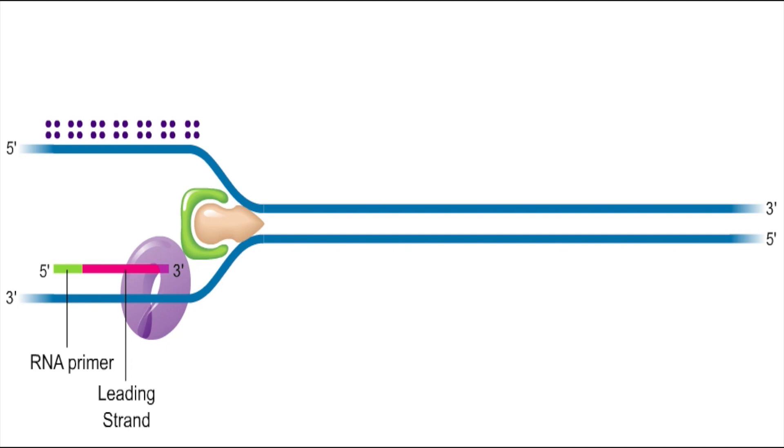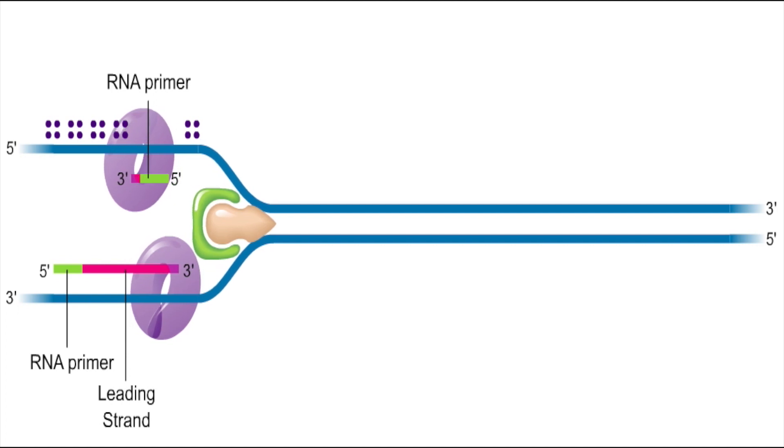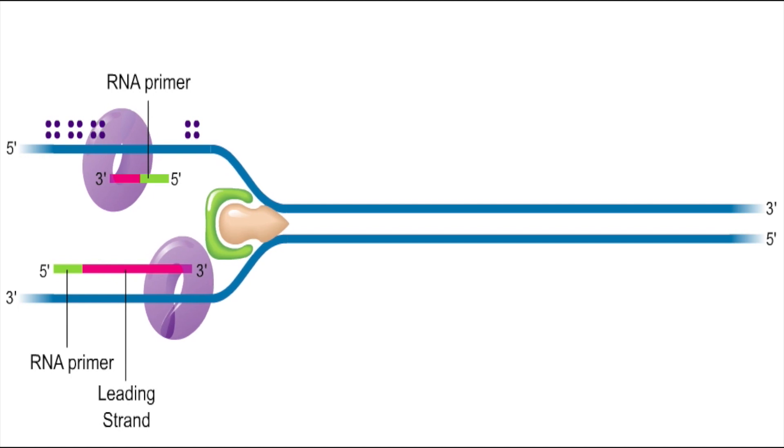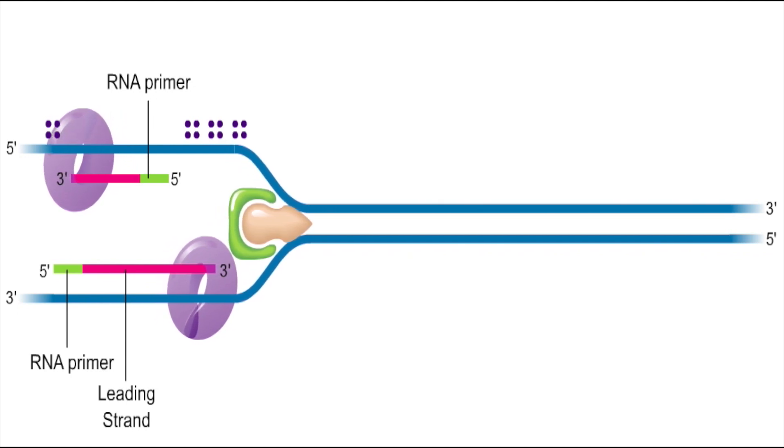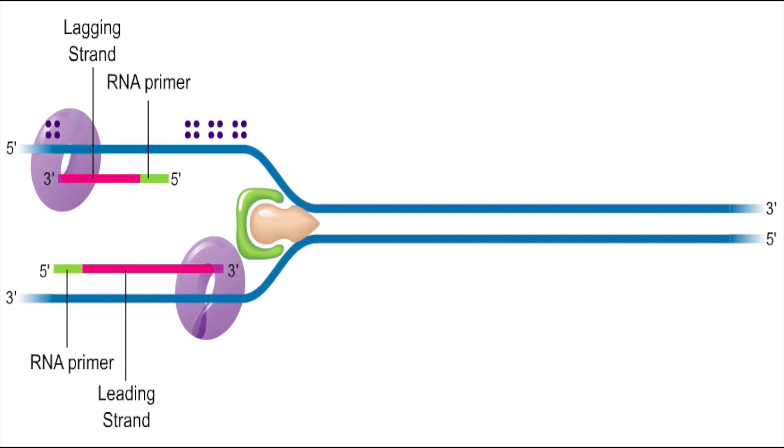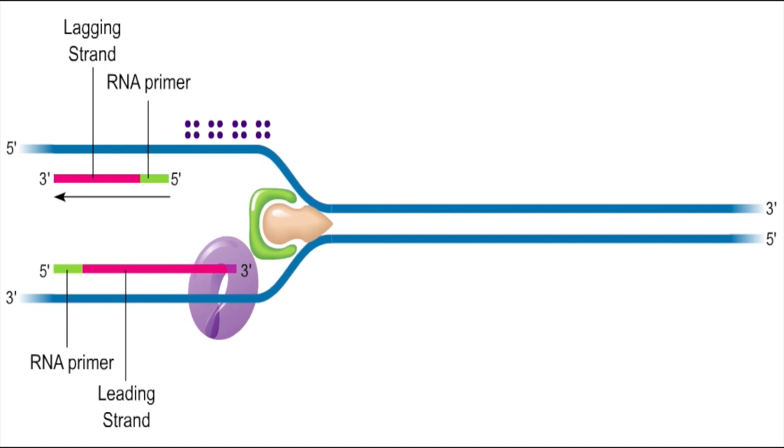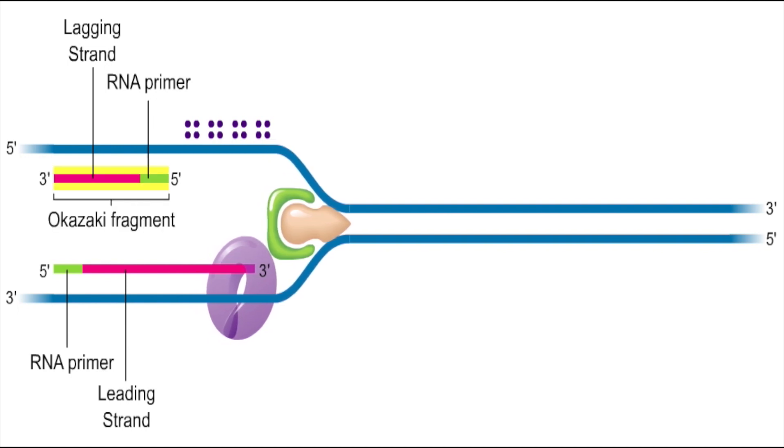On the top template strand, DNA primase synthesizes a short RNA primer in the five-prime to three-prime direction. Then, DNA polymerase III adds DNA nucleotides to the RNA primer in the five-prime to three-prime direction. This new DNA is called the lagging strand because it is being made in the opposite direction as the movement of the replication fork. The short segment of DNA produced along the top template strand is called an Okazaki fragment.